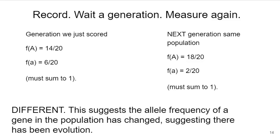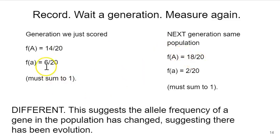We looked at the term allele frequency in the previous lecture, and you did some scoring. We talked about how if you can do that over generations, you can then calculate allele frequencies and compare them over generations. For example, the frequency of the big A allele was 14 over 20 in generation one, and 18 over 20 in generation two, with a corresponding change in the recessive allele from 6 over 20 to 2 over 20. That change suggests that evolution has happened.